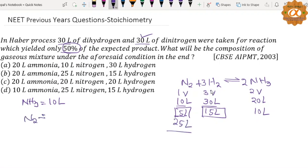The final composition will be: nitrogen remaining 25 liters, hydrogen remaining 15 liters, and ammonia produced 10 liters. That means option number D is correct. Thank you.